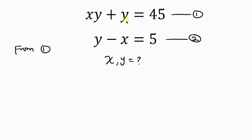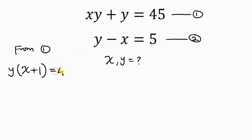From equation 1, you notice that y is common, so I'll factor out y. Open brackets: x plus y divided by y — which gives x plus 1 — close brackets, equal to 45. We can name this equation 3.